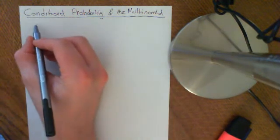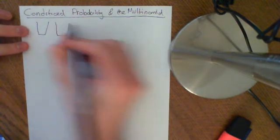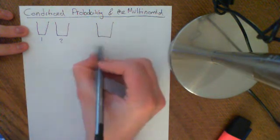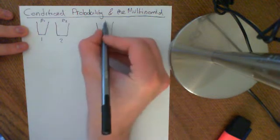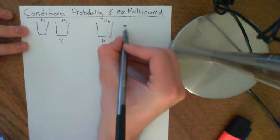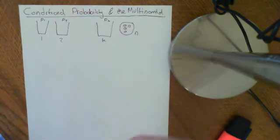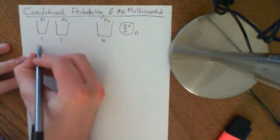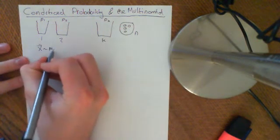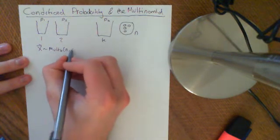Let's have a quick reminder of the setup. We have our k baskets and we have n tennis balls — baskets 1 through k — and we have some probability vector p1, p2, up to pk, which tells us the probability that an individual tennis ball will go into basket i, which is pi. So we know that this vector x is multinomially distributed with number of baskets k, number of trials n, and this probability vector p.